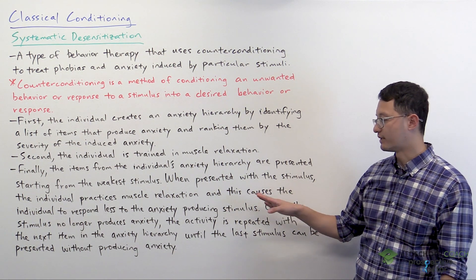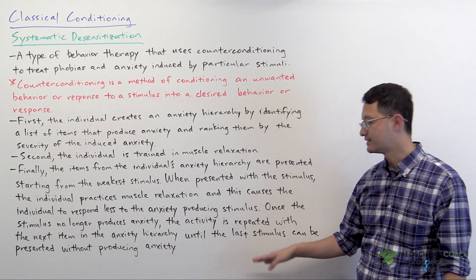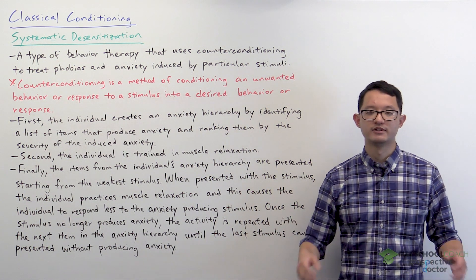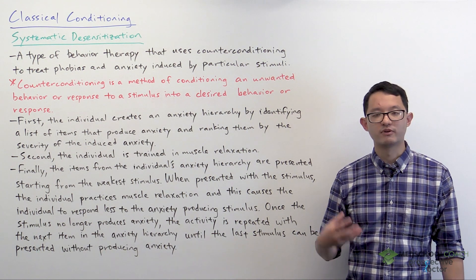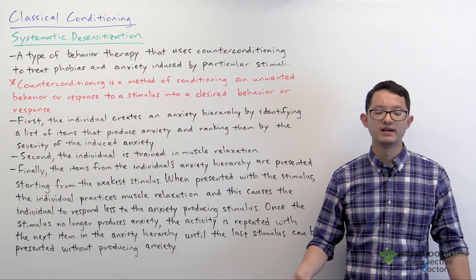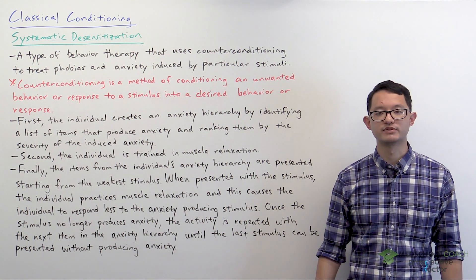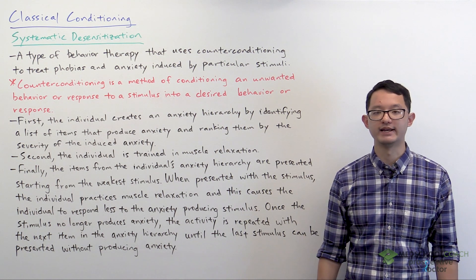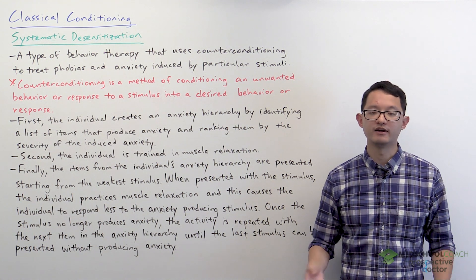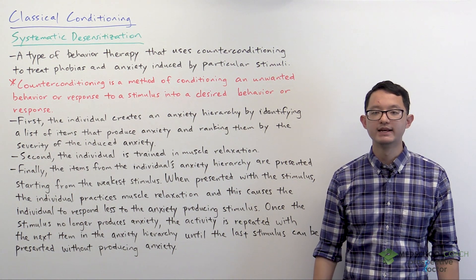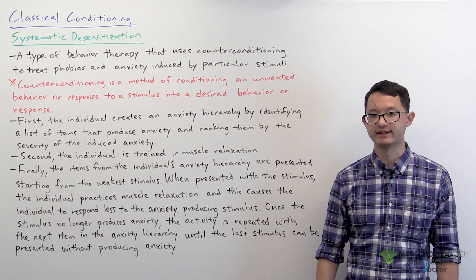The idea is that when the individual practices muscle relaxation, this causes them to respond less to the anxiety-producing stimulus. After a few repetitions, the goal is for that weakest anxiety-producing stimulus to no longer produce any anxiety. Once that occurs, the process is repeated with the next item in the anxiety hierarchy, and continues over and over again until the entire list is complete and the item that produced the most anxiety at the beginning no longer produces any anxiety.